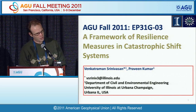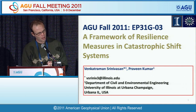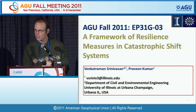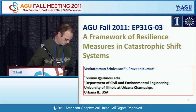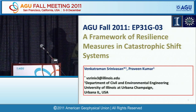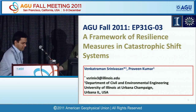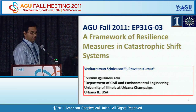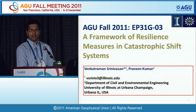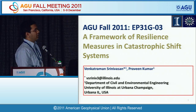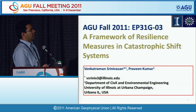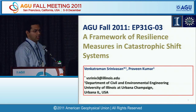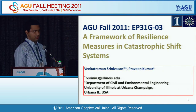Our second talk is by Srinivasan and Kumar. The title of the talk is A Framework for Resilience Measures in Catastrophic Shift Systems. My name is Venkat, and I'm a PhD student from Illinois. Today we're going to talk about how we can develop a framework for resilience measures in the context of a catastrophic shift system.